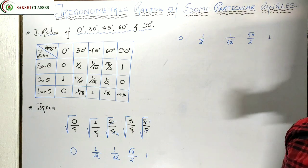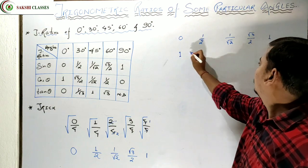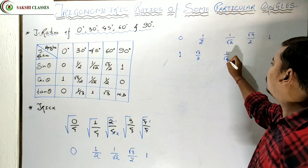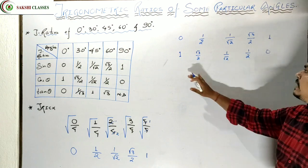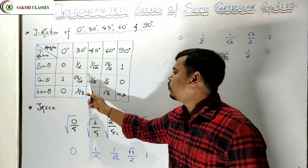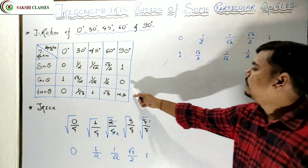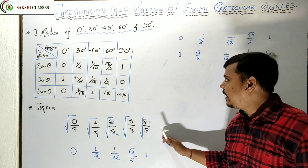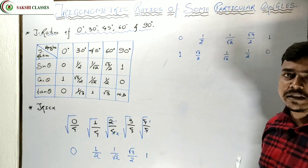Now to get cos values, reverse the sin sequence. Whatever you wrote for sin, write it in reverse order. So cos gives: 1, √3/2, 1/√2, 1/2, 0. So cos 0°=1, cos 30°=√3/2, cos 45°=1/√2, cos 60°=1/2, cos 90°=0. Even if I don't remember the table, this trick gives me both sin and cos values.